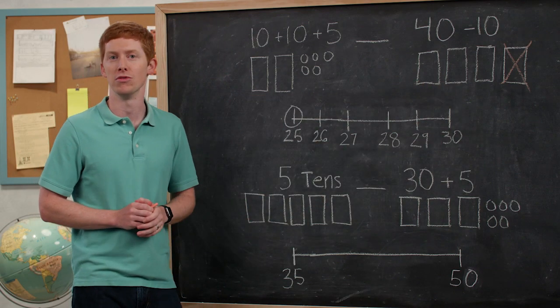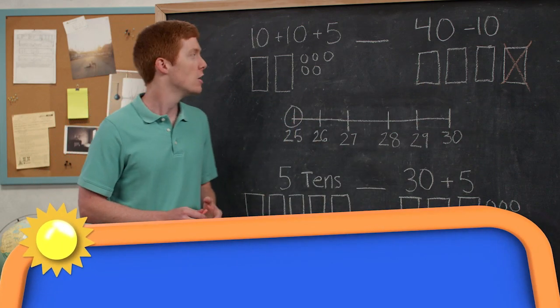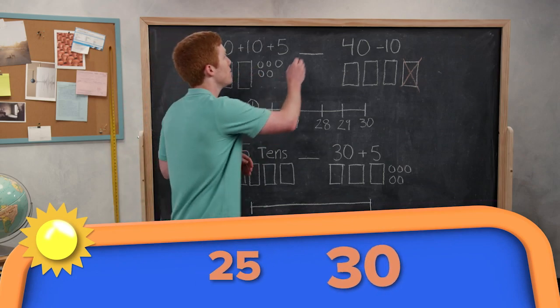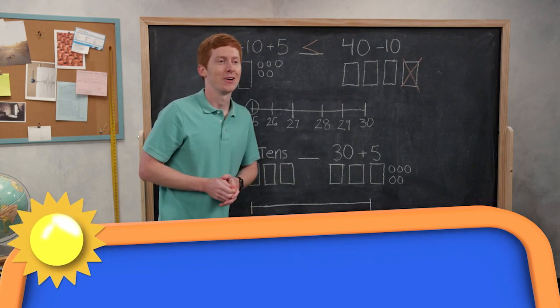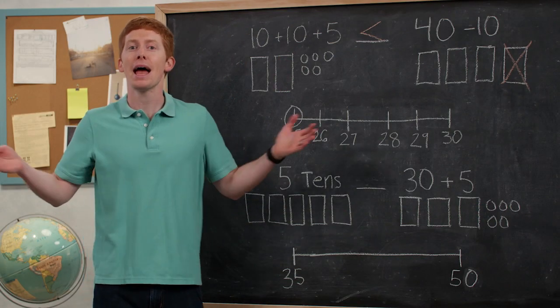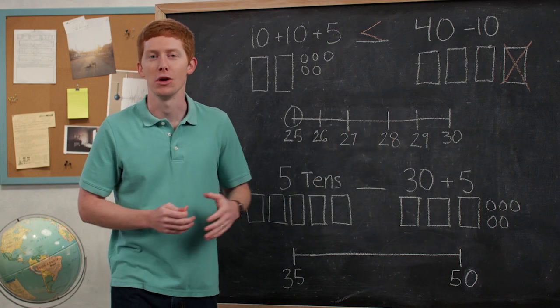Over here, there's only two groups of 10 plus five ones. So I could write that in now and say, 25 is less than 30, right? Okay. And we've got it, but by how much, how much greater is 30 than 25?